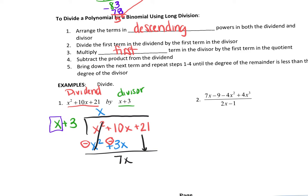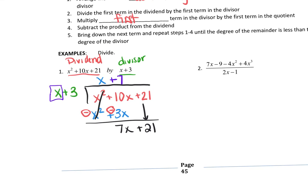We bring the 21 down and repeat the process. What do I need to multiply x by to make it a 7x? I need a positive 7. So 7 times x is 7x, and 7 times 3 is positive 21. I change the signs: minus, minus. I circle them to show I'm changing signs. Both terms cancel, and the remainder is 0. So the quotient is just x plus 7.